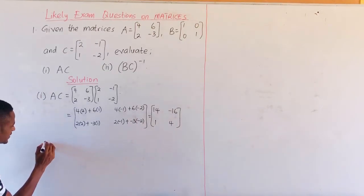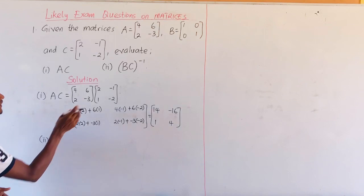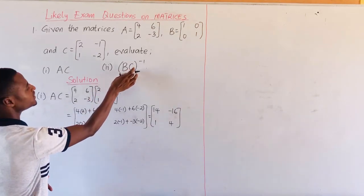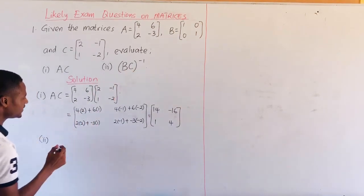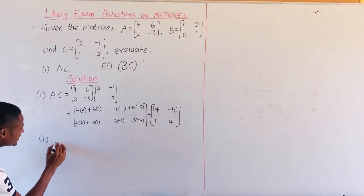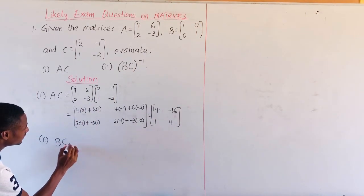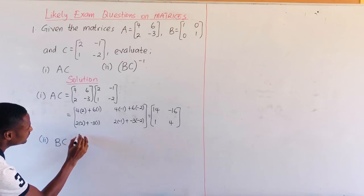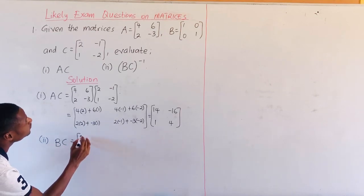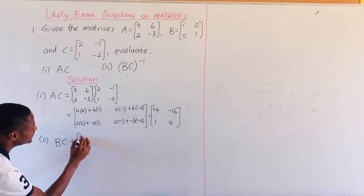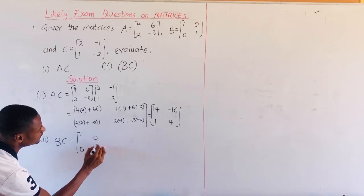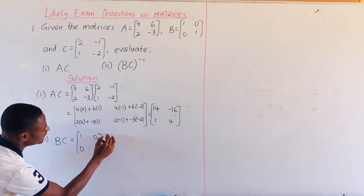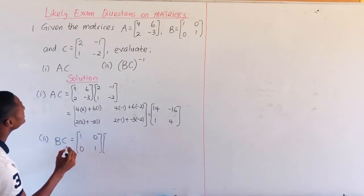For the second part, we are going to find the inverse of B times C. So we must first find B times C. B times C will equal the matrix B — 1, 0, 0, 1 — times the matrix C.